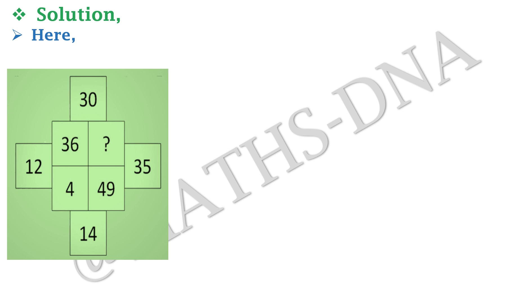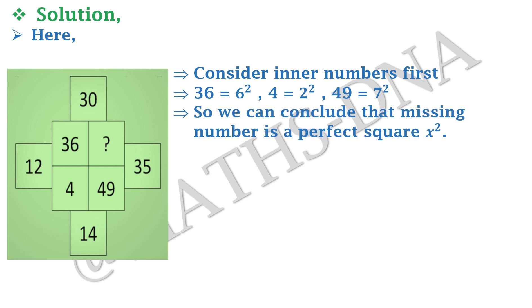In the inner box, you can easily see that the numbers 36, 4, and 49 seem to be a perfect square. So firstly, we take the inner box and we notice that 36 equals to 6 square, 4 equals to 2 square, and 49 equals to 7 square. This implies that our missing number will also be a perfect square, that is sum x square.